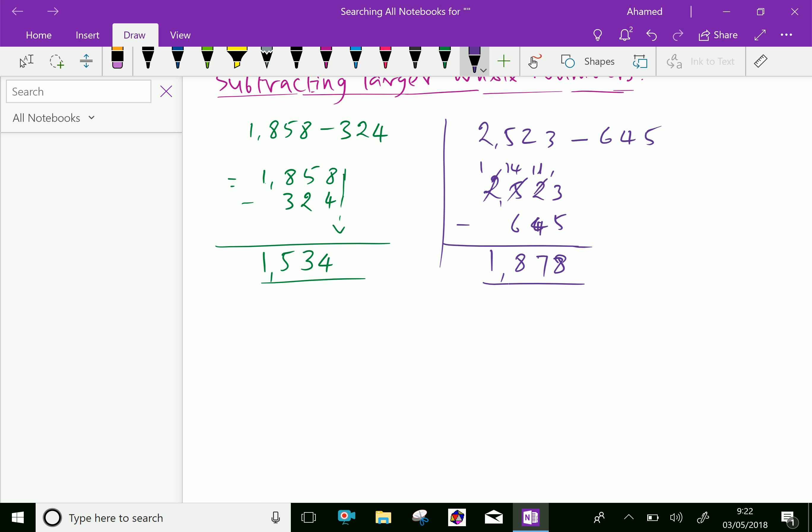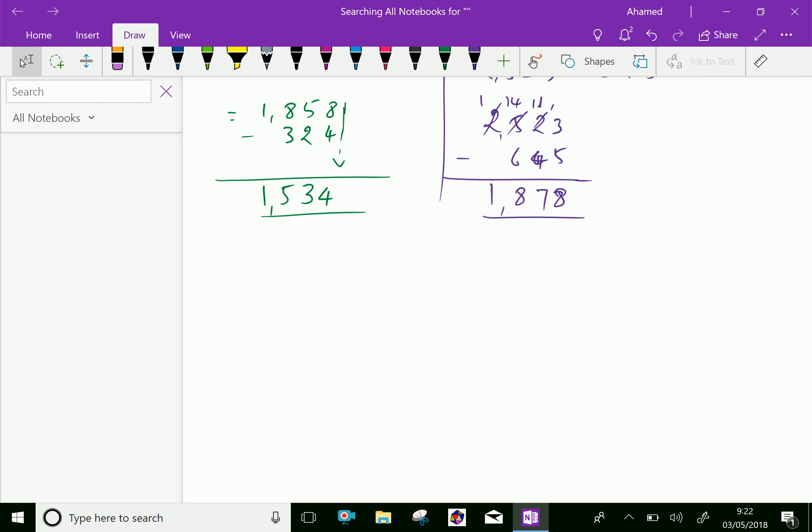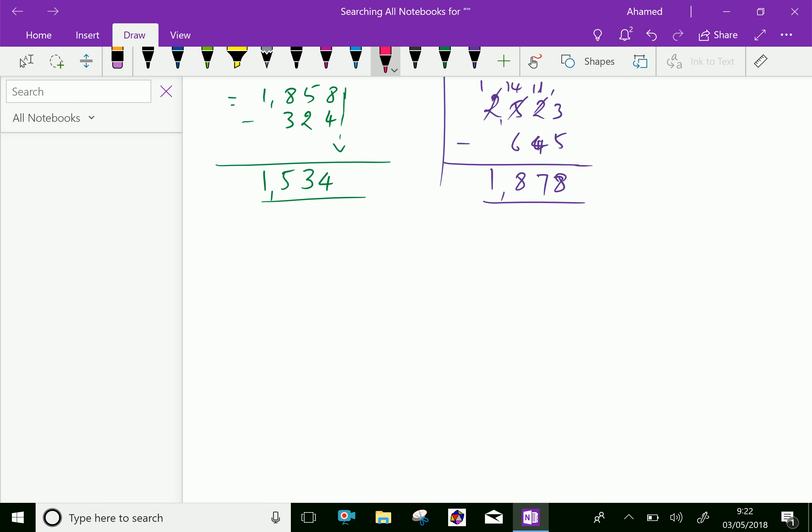Now let us do one more example: 48,325 minus 39,238.